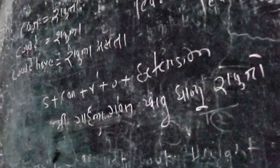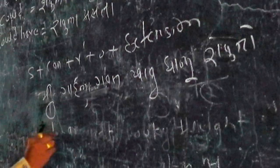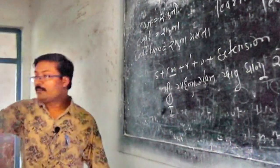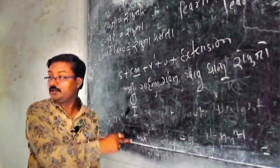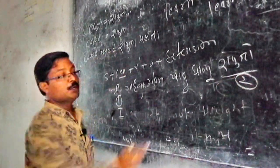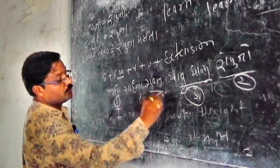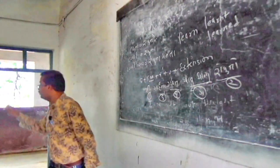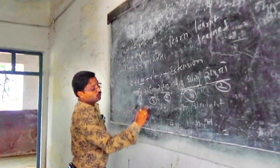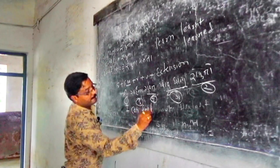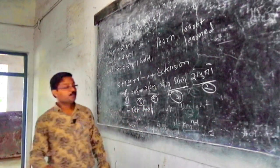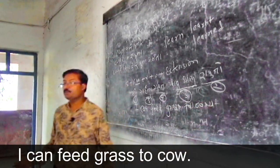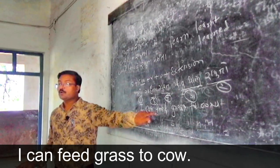You want to speak in English — go from last to first. I can feed grass to cow. Another example: 'Mi tayala maru shakto' — Mi means I, shakto means can, kill him. I can kill him. With the help of can, you can make numbers of sentences: I can ignore, I can earn money, I can come to class, I can wear new dress, I can sacrifice post.